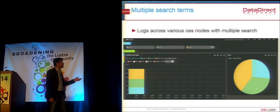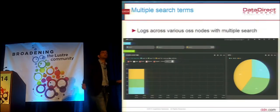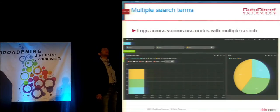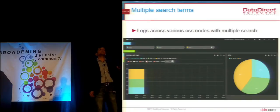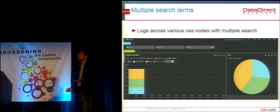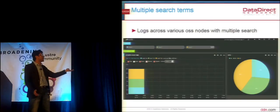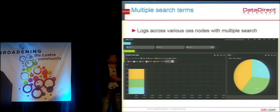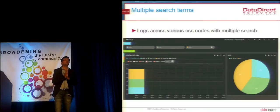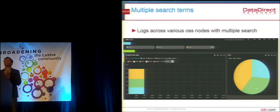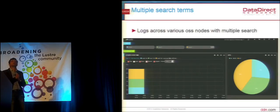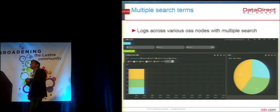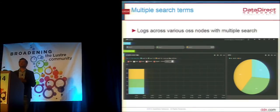I can put in multiple search terms — for example, I want to see warnings across my OSSs and get an idea that there are about five times more warnings on OSS0 than on other OSSs. Maybe something's wrong with OSS0 or with the kind of I/O happening there. In the pie chart and stacked area graph, I can figure out for a certain search term what the segregation is across a bunch of hosts and nodes. It's pretty configurable depending on what problem you're trying to solve.